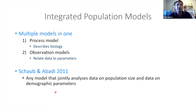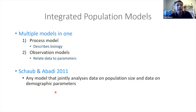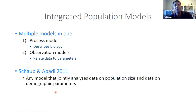Integrated population models represent multiple models in one overarching model. There's a process model that describes the biology — it might look a lot like the matrix models you're used to using. And then there's an observation model that relates data to the parameters in the biological model — it's the model of how you observe the data, the process by which the data arose. Data have to come from the animals, so there's a link from the data to the biology.